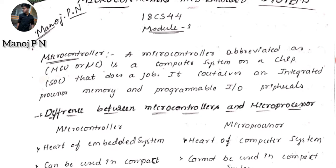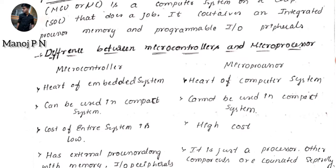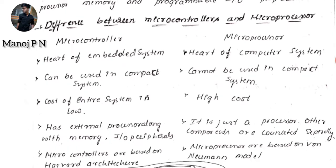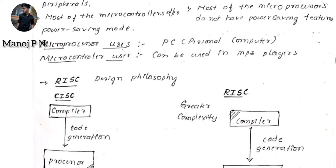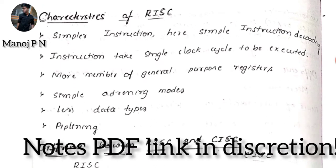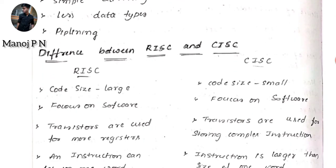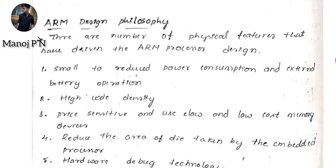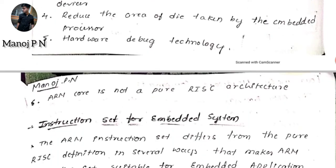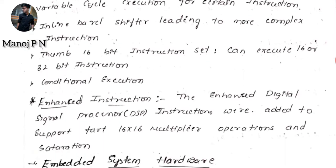I have written the microcontroller definition, the difference between microcontroller and microprocessor, RISC and CISC, characteristics of RISC, the difference between RISC and CISC, ARM design philosophy, and the instruction set for embedded systems.